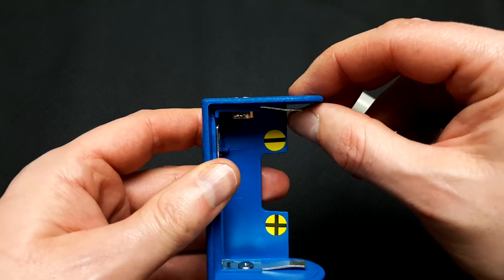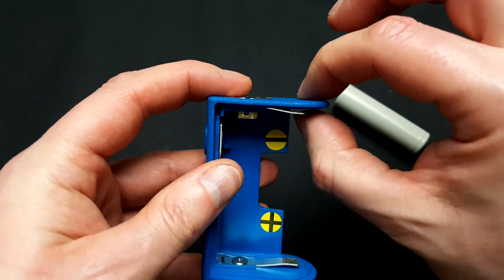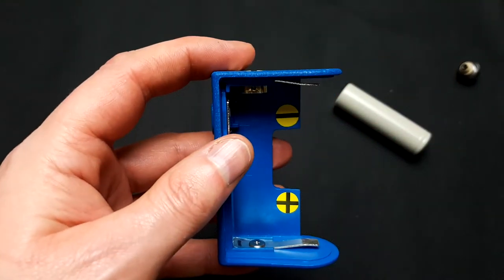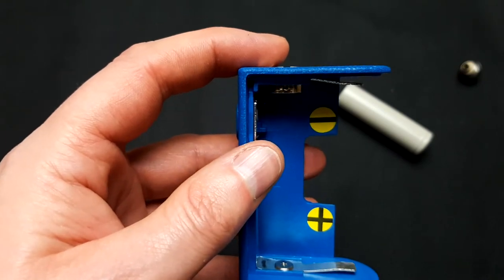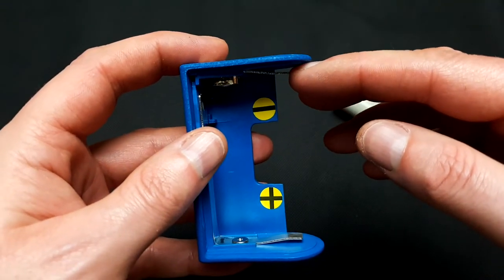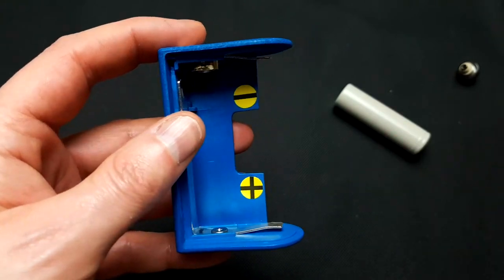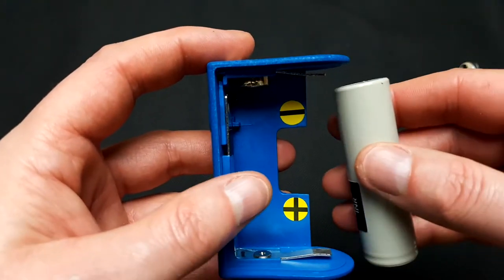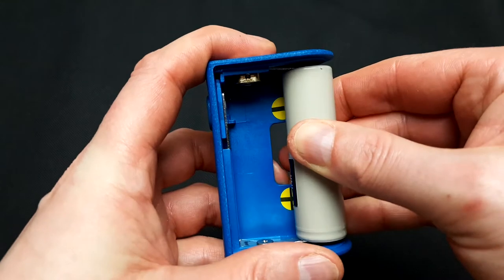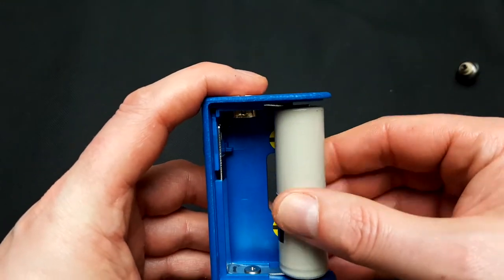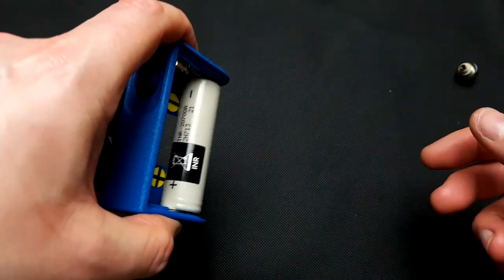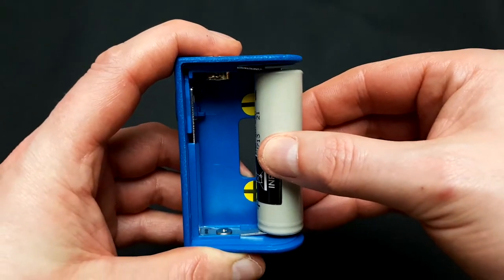But over time, these things will start to bend up. So all you need to do is just get yourself a screwdriver or something, get underneath there, prise it down a bit. Same with that. You can prise that up. Don't do it too much. Otherwise, you won't be able to get your battery in. But, I found it started to get loose. But that's quite tight.